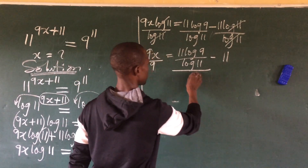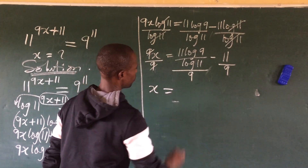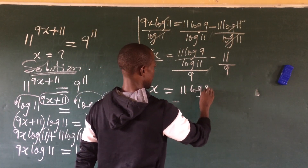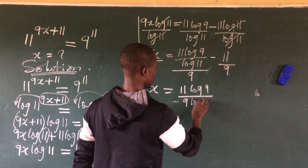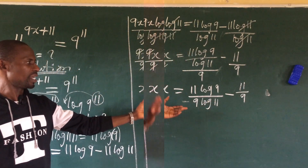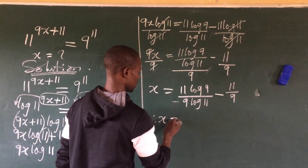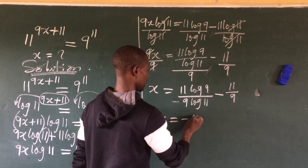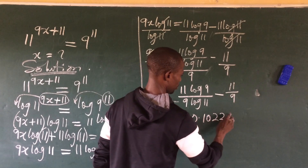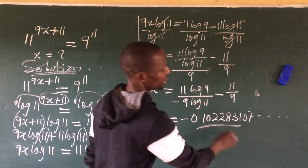We are looking for x, so we simply divide by 9. Dividing everything by 9, we get: x equals 11 log 9 over 9 log 11, minus 11 over 9. Plugging this into a calculator gives the numerical value: x equals approximately minus 0.1022831, and so on.